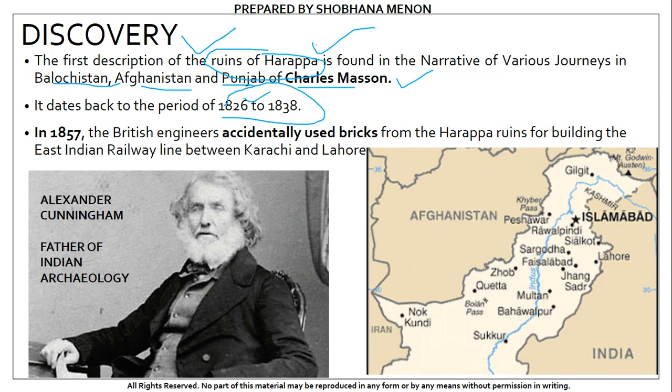Subsequently, in the year 1857 — which you can also associate with the year of the Indian Sepoy Mutiny — British engineers accidentally stumbled across a mound of bricks which were of the finest quality, and they decided to use these bricks to construct a railway line between the cities of Karachi and Lahore. The engineers had no idea that these bricks were actually thousands of years old and belonged to the Harappan civilization.